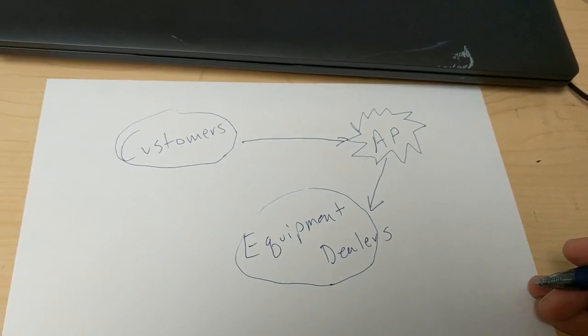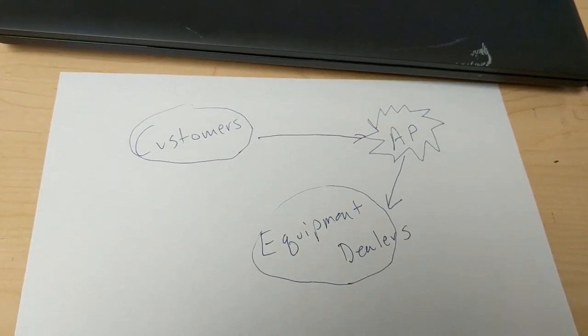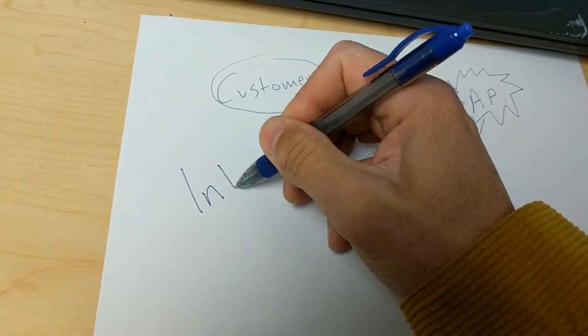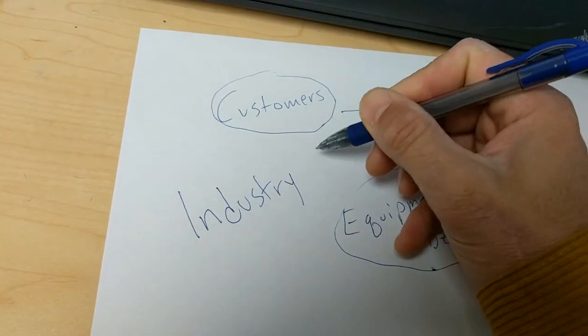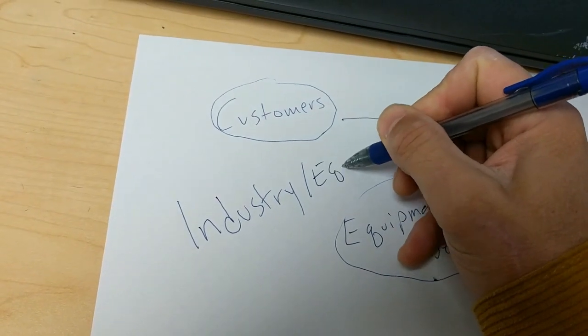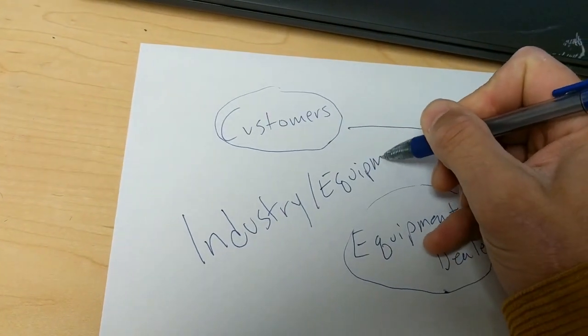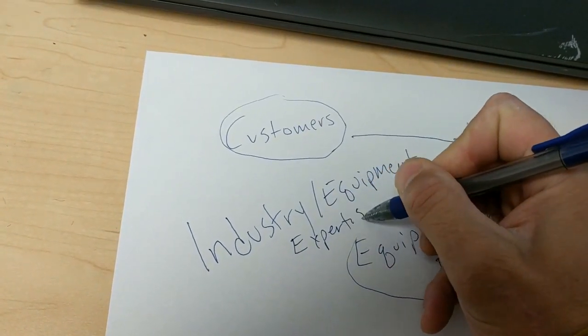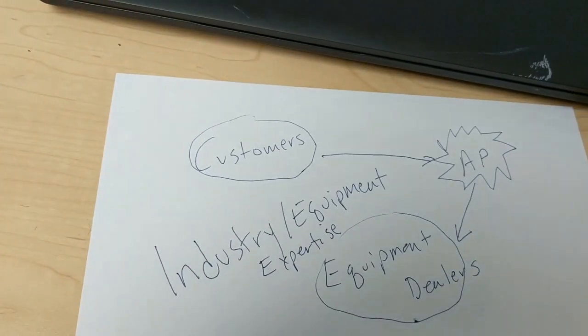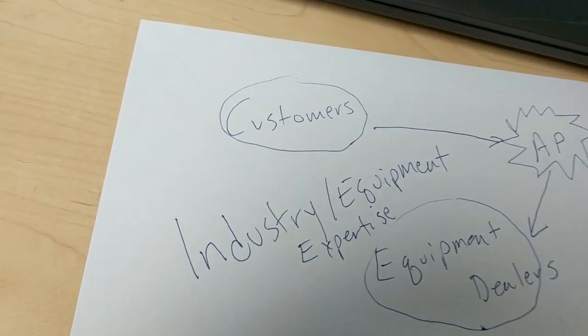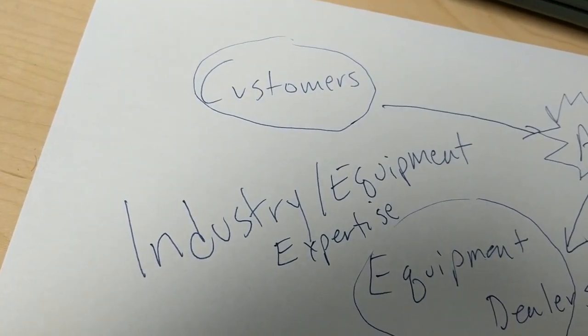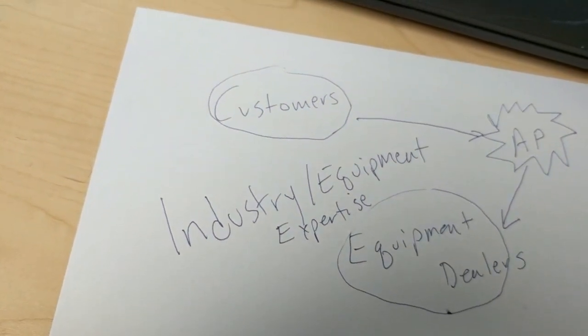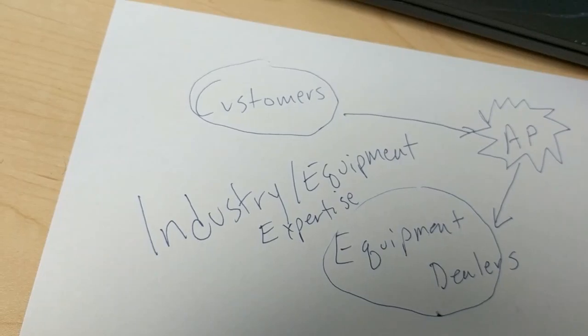And what is required, especially on the sales side is we need to have equipment and industry expertise with our salespeople. And the only way really to do that is to have salespeople really focus on usually just one industry at a time.